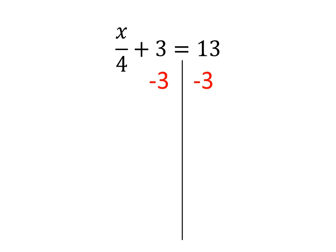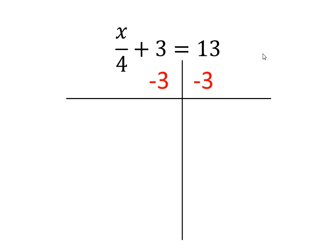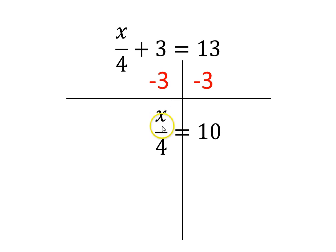When we do that, we can combine terms. The 3 and the minus 3 cancel, and 13 minus 3 gives us 10. So our equation becomes x over 4 equals 10. The 3s are gone because we subtracted them, and 13 becomes 10 because we subtracted 3 from 13.